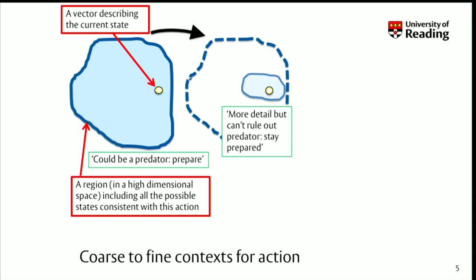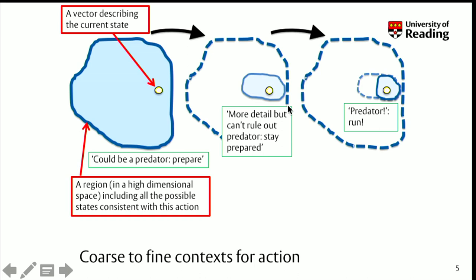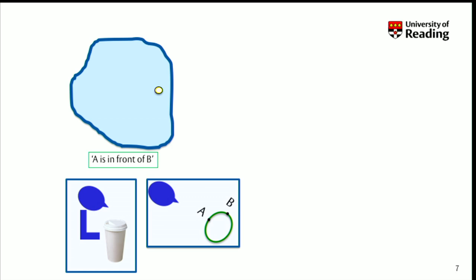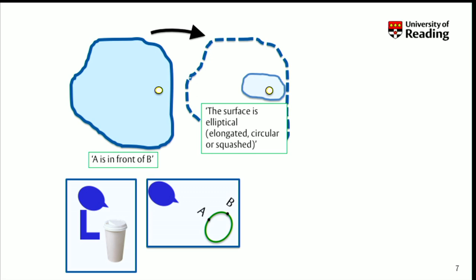We're in a shrunken part of this high-dimensional space, but we're still in there. Then you get more information, and it says: oh my goodness, there's a predator — run. Or: no, we're okay, there's no predator — relax. It's a kind of coarse-defined description of states. The current state gets refined as more information comes in, and you can see it's something that evolution could do. Now let's think about perception in the same way. This coarse description is simply 'A is in front of B.' I'm about to pick up this cup, and I've got some disparity information about A compared to B, and at the coarse level, just A is in front of B.